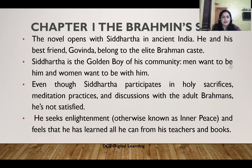Chapter 1 is titled 'The Brahmin Son.' The novel opens with Siddhartha in ancient India. He and his best friend Govinda belong to the elite Brahmin caste. Siddhartha is a golden boy of his community — he is born into a very destined place, belonging to the upper echelon of the caste system. Even though Siddhartha participates in holy sacrifices, meditation practices, and discussions with other revered Brahmins, he is not satisfied. He seeks enlightenment — otherwise known as inner peace — and feels he has learned all that he can from his teachers and books.